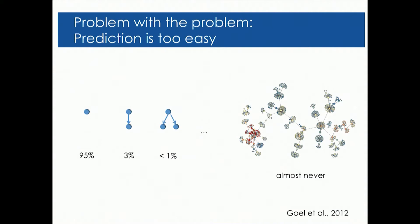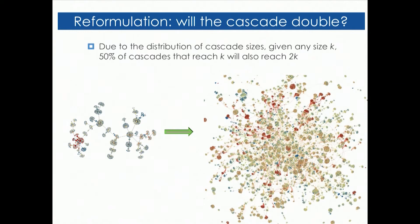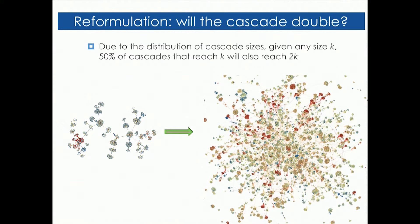We want a more general way of formulating the problem. Fortunately, power law distributions — which tend to govern the number of reshares per photo, especially when the power law exponent is two — have a neat property: if you take all cascades that have reached size K, half of them will be of size between K and 2K, and half will be of size greater than 2K. This is great for prediction because you have a balanced set. And at any stage in the cascade's life, you can still ask: is the cascade going to double?